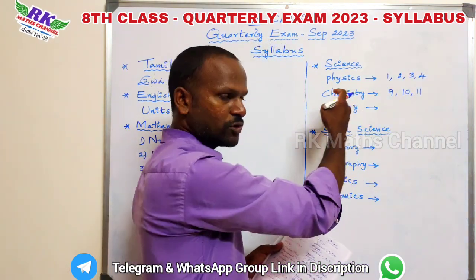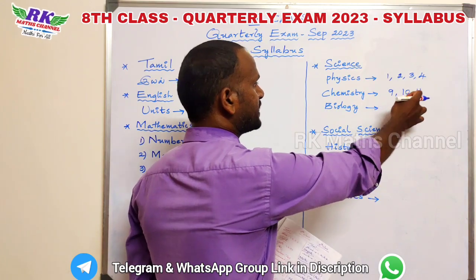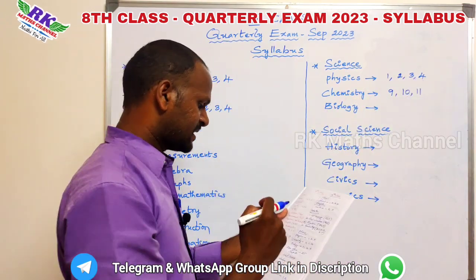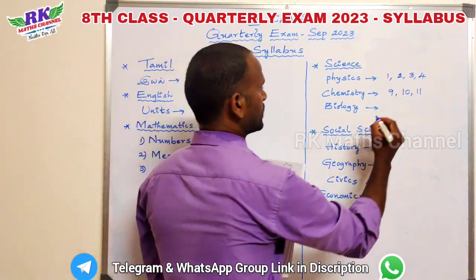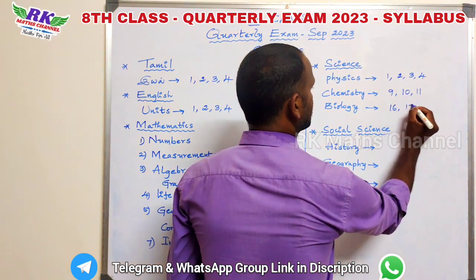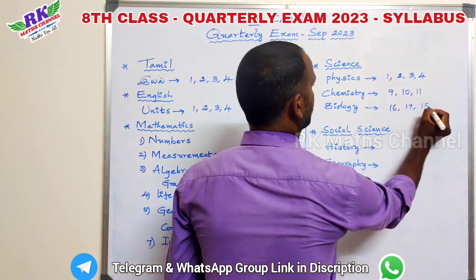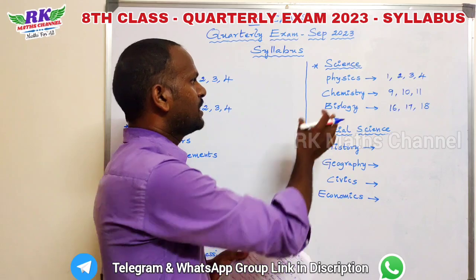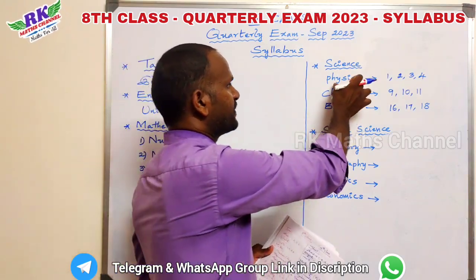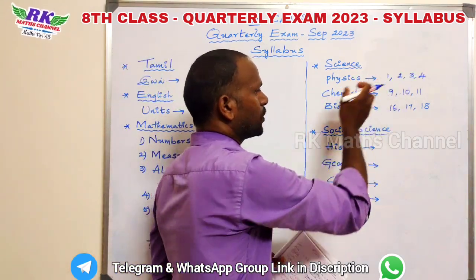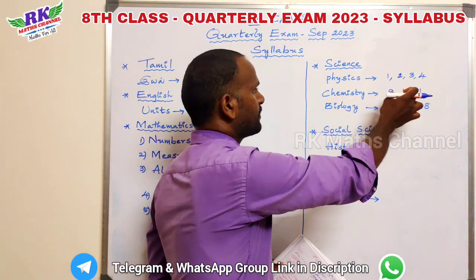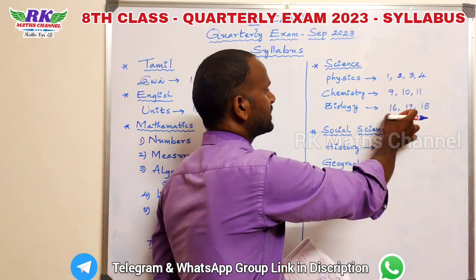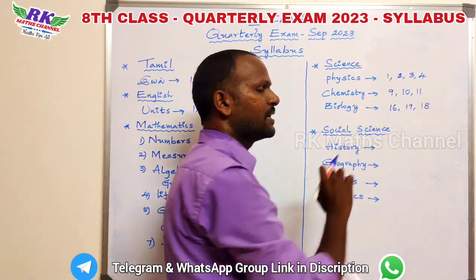In Chemistry, we start with unit 9. For Biology, the first 4 units are covered. In Science: Physics is units 1–4, Chemistry is units 9, 10, 11, and Biology is units 16, 17, 18.